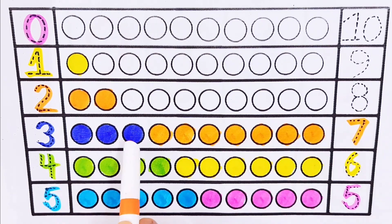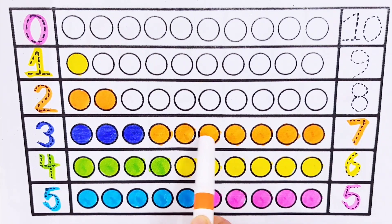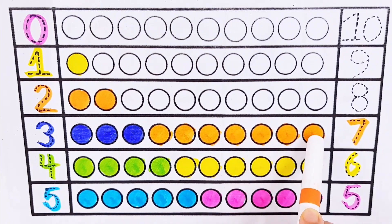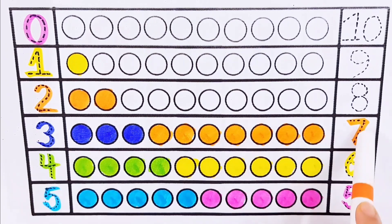One, two, three, four, five, six, seven, eight, nine, ten. Three plus seven equals ten.